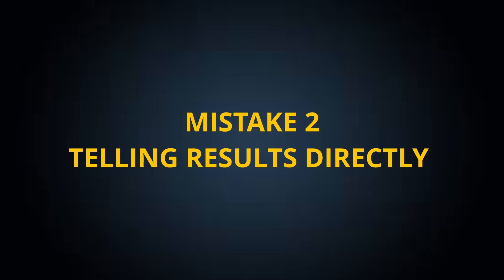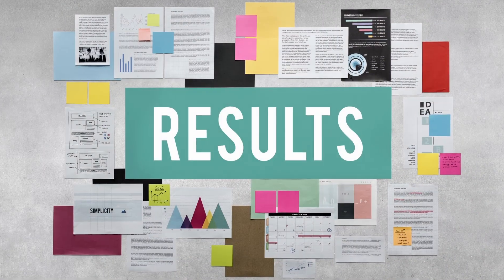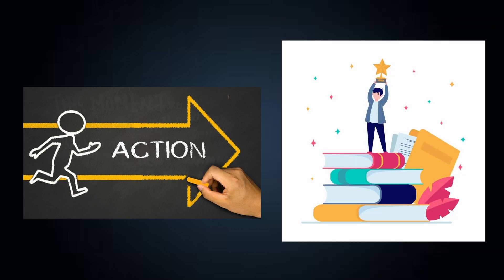Mistake number two: telling the results directly rather than telling the action first. Basically what happens is whenever the question is asked, most students tell the results obtained directly rather than telling what action they took to obtain those results. The point is, why should the interviewer believe those results since there is no evidence for them? So whenever you are telling any result, make sure you first tell what action you took in order to obtain those results.